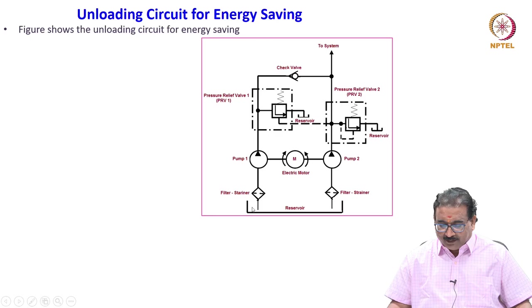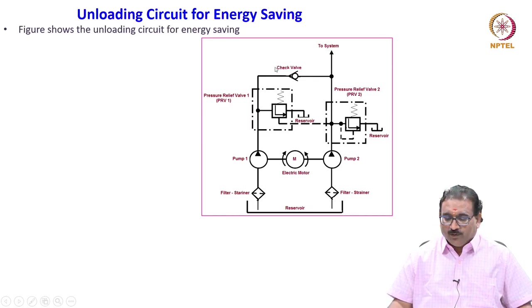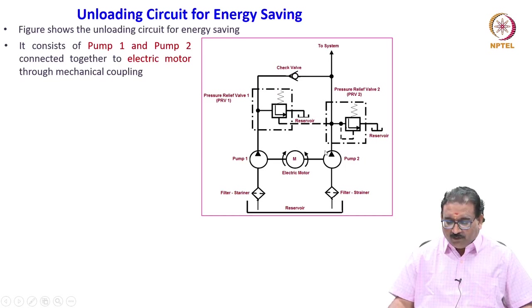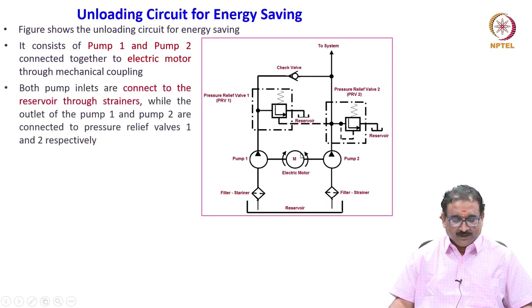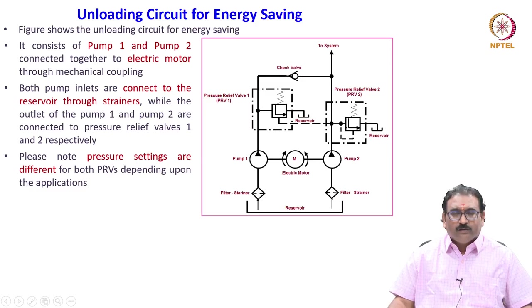The inlets are connected to the tank through the strainers. It will go to pressure relief valve 1 with a different setting. Pump 2 goes to pressure relief valve 2 — PRB 2 — then it will go to the system. A check valve is used here. It consists of Pump 1 and Pump 2 connected together to an electric motor through a mechanical coupling. Both pump inlets are connected to the reservoir through the strainer and the pressure relief valve. Please note the pressure settings are different for both PRB 1 and PRB 2.